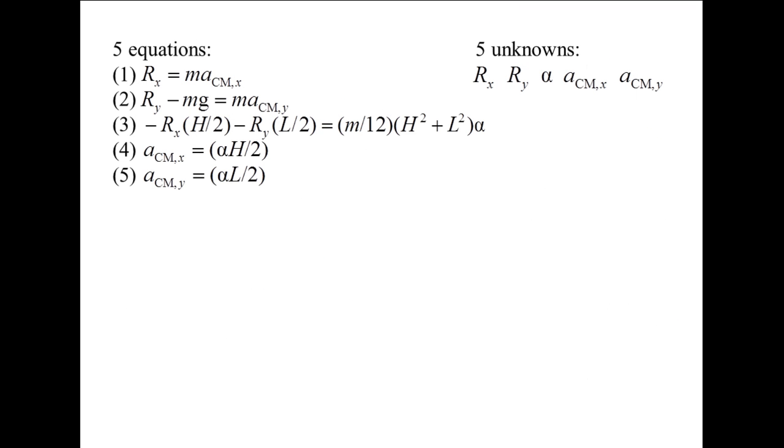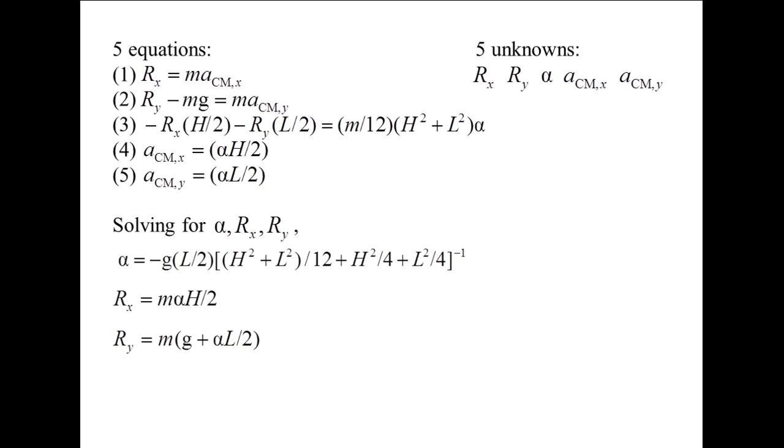Now we have five equations and five unknowns, and are able to solve for alpha, Rx, and Ry. After plugging in the known quantities, we find the angular acceleration of the plate is approximately 46.4 radians per second squared in the clockwise direction.